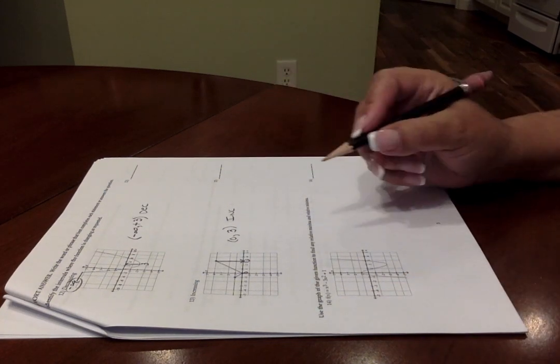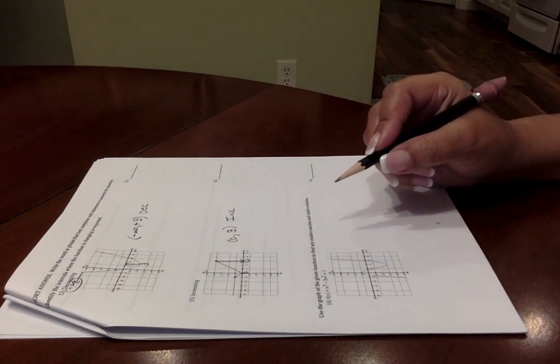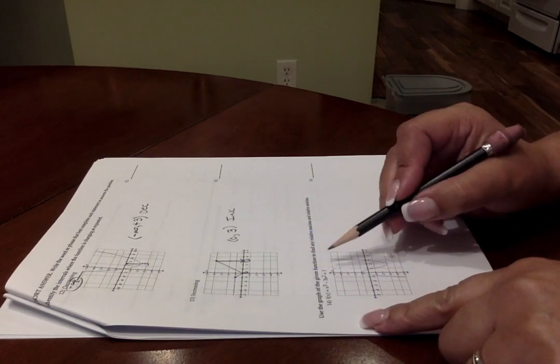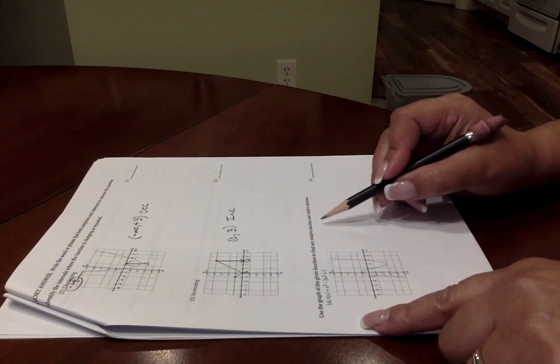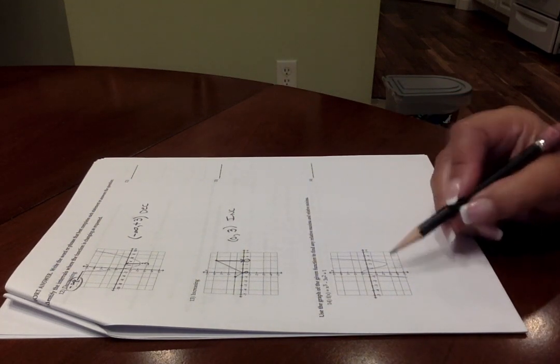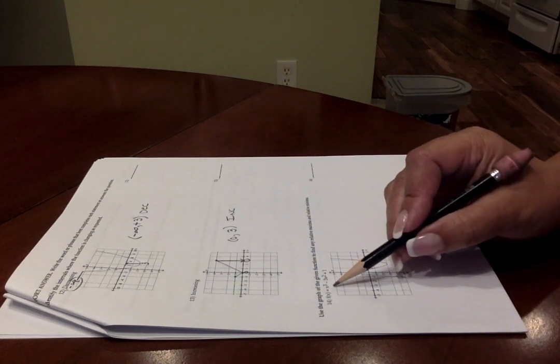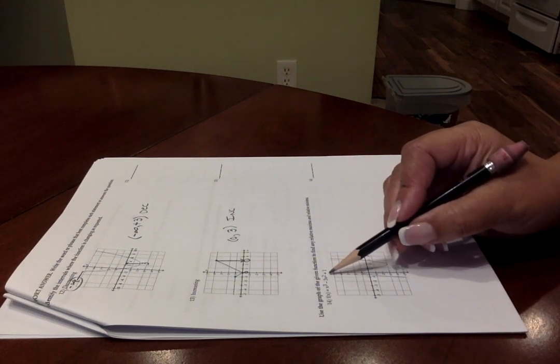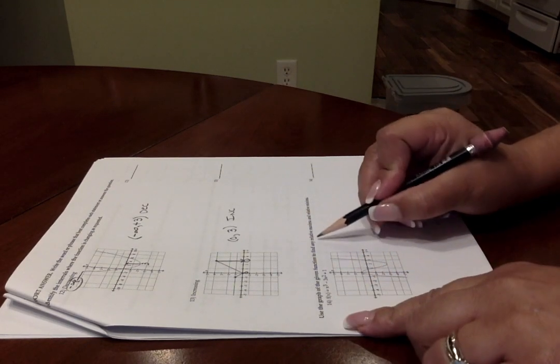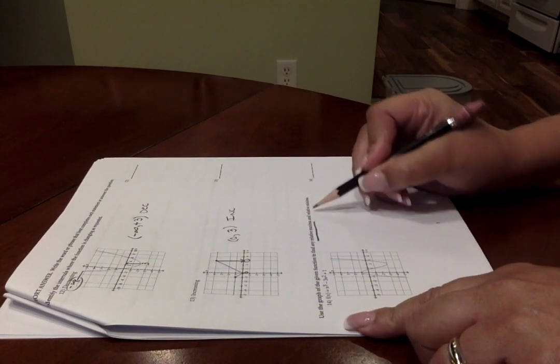Moving on to number 14. Use the graph of the given function to find any relative max and relative min. As you are looking at this graph, this graph represents the function X cubed minus 3X squared plus 1. And you are going to name the maxima and the minima.